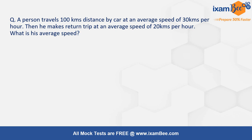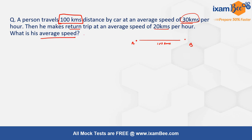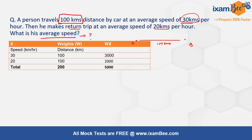On your screen you can see a question: a person travels 100 kilometers by car at an average speed of 30 km/h from point A to point B, then makes a return trip at an average speed of 20 km/h. You are asked to find his average speed. The speeds given are 30 km/h and 20 km/h, and the weights given are the distances: 100 km and 100 km.